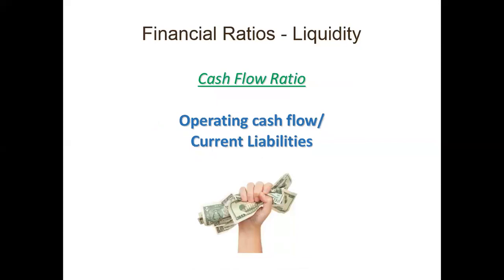Next is the cash flow ratio. Here we are talking about the operating cash flow of the business — you exclude everything except the operating cash flow. The denominator is current liabilities. This is the best measurement at the end of the day because you can really see if the company has cash available for its daily operations.